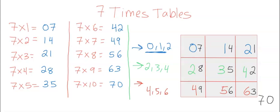So we see that the first row has 7, 14, 21, which is the same as the first three products of the 7 times tables here. 7 times 1, 2, and 3, which is 7, 14, 21.